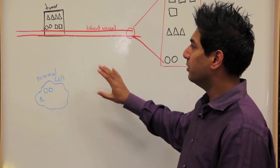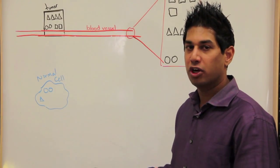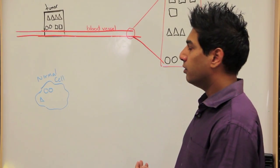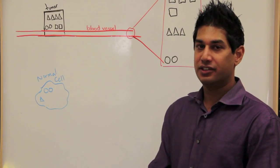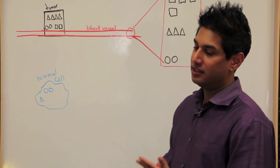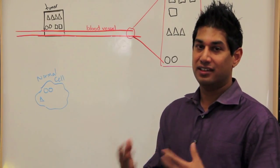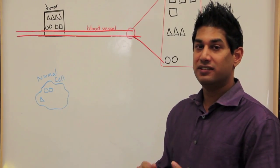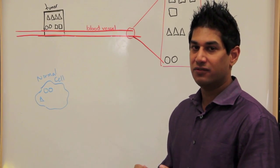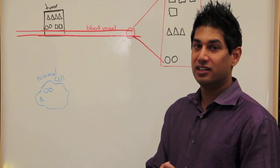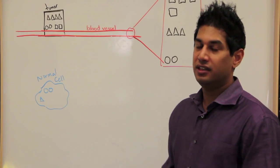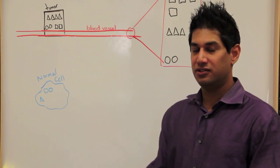What this diagram is showing is the challenge of biomarker discovery. And so what we're trying to do in detecting cancer early is we're trying to say that somebody somewhere in their body has cancer. And that has two pieces to it. One is being able to tell the difference between healthy cells and cancer cells. And the other is being able to detect those differences in the blood.